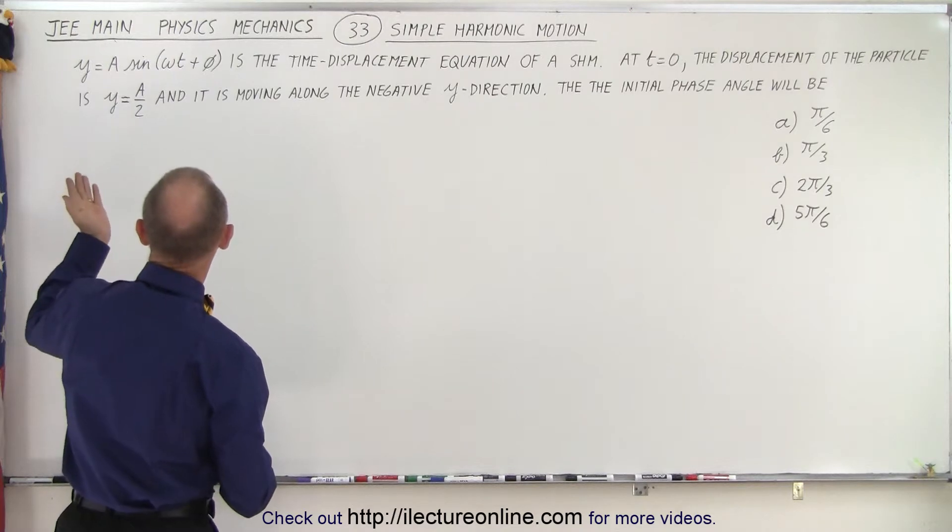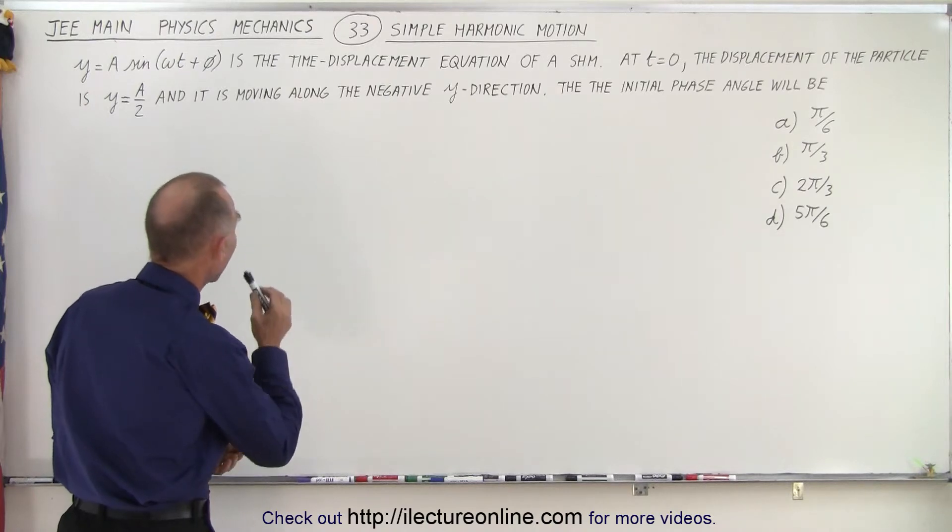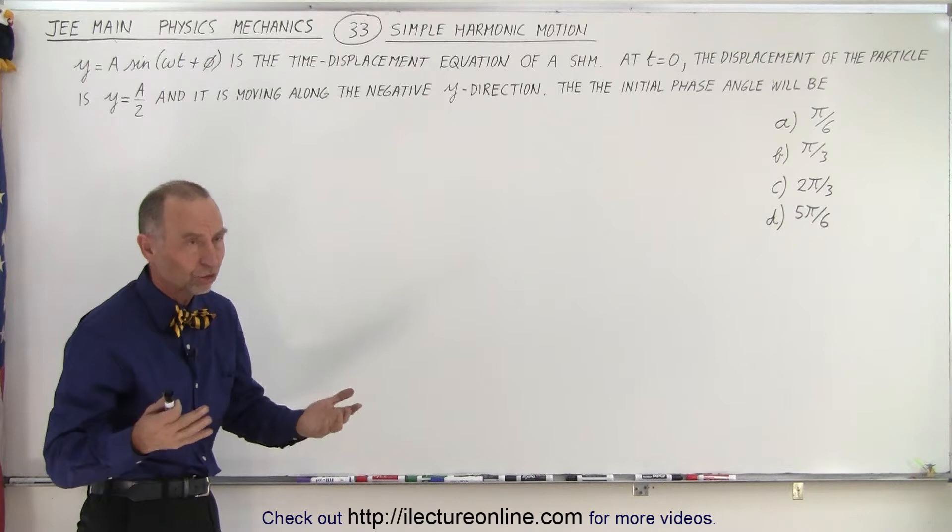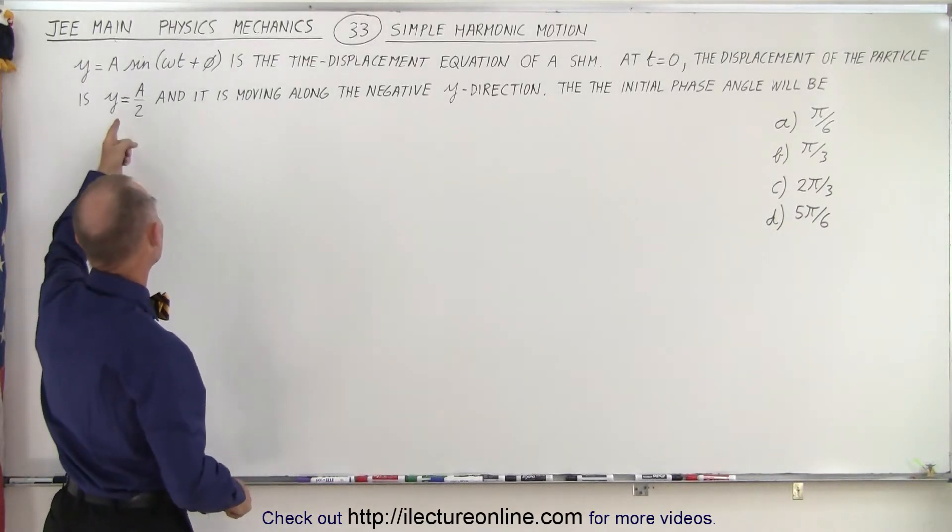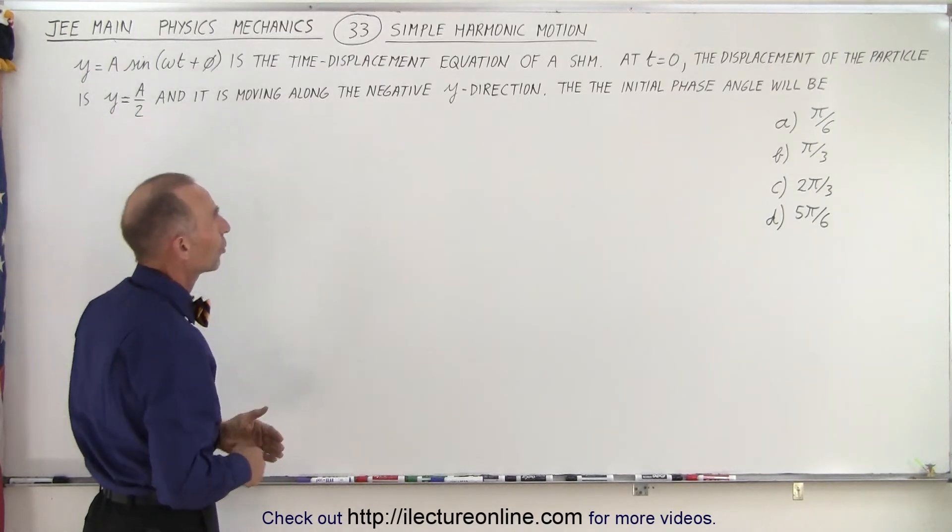We're given an equation y equals a times the sine of omega t plus the phase angle, and they tell us that it's the time displacement equation of simple harmonic motion, which is correct. It could be sine or cosine, plus phi or minus phi, doesn't matter, but it's the correct form.